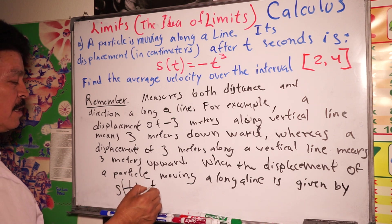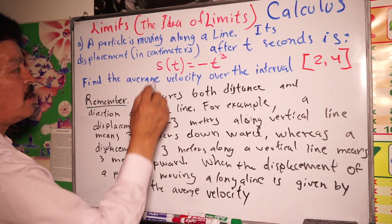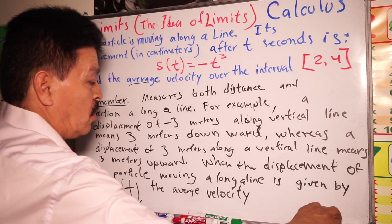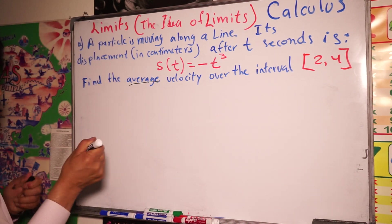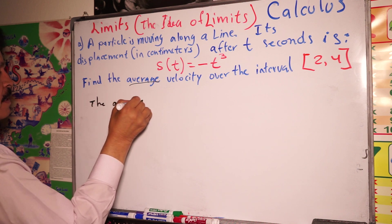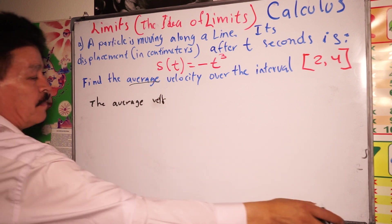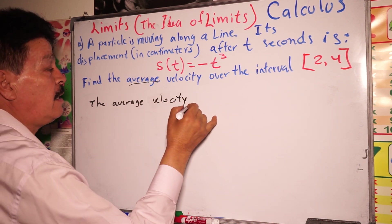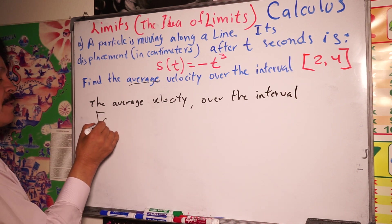So the average velocity, we are talking about the average here, the average velocity. Let me erase this and then let me show you here using the formula. The average velocity over the interval a, b.